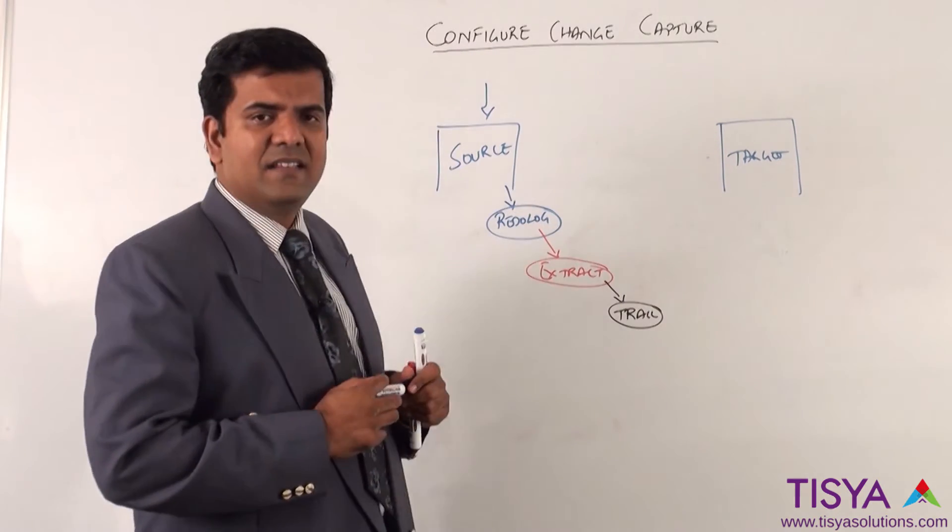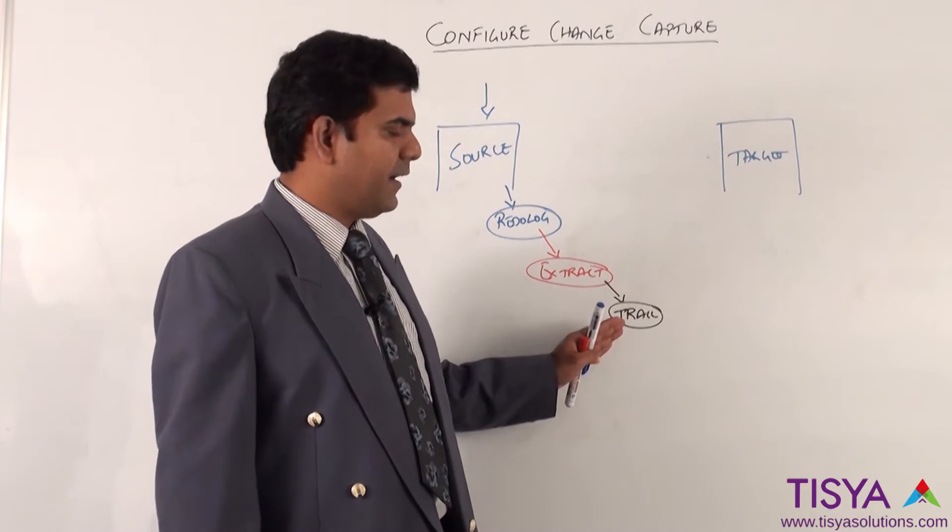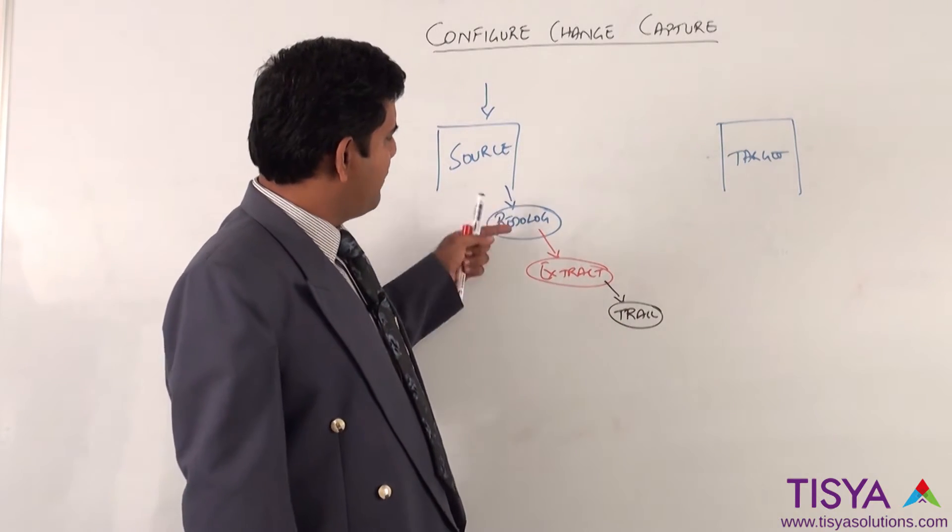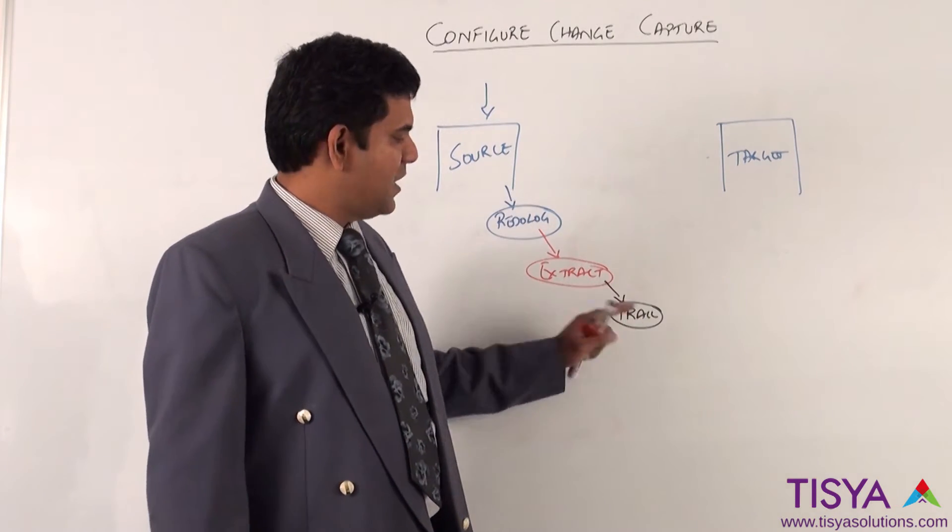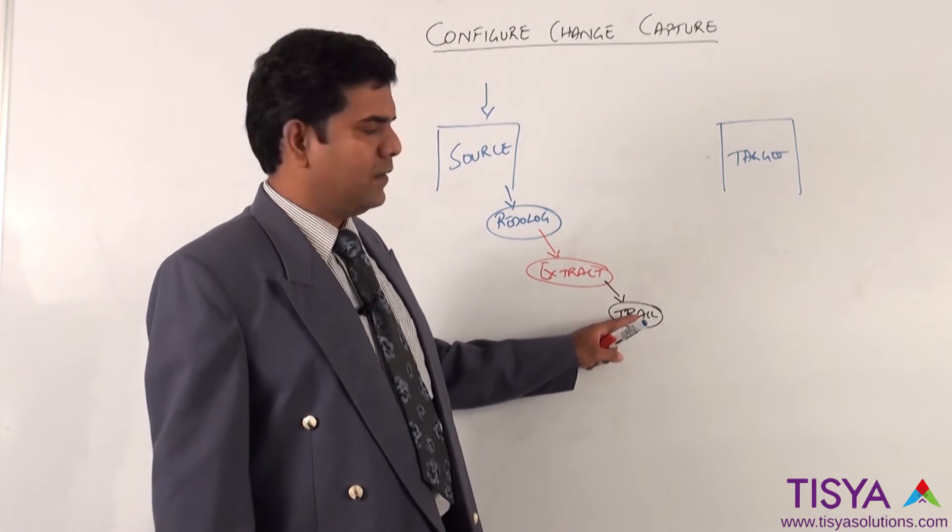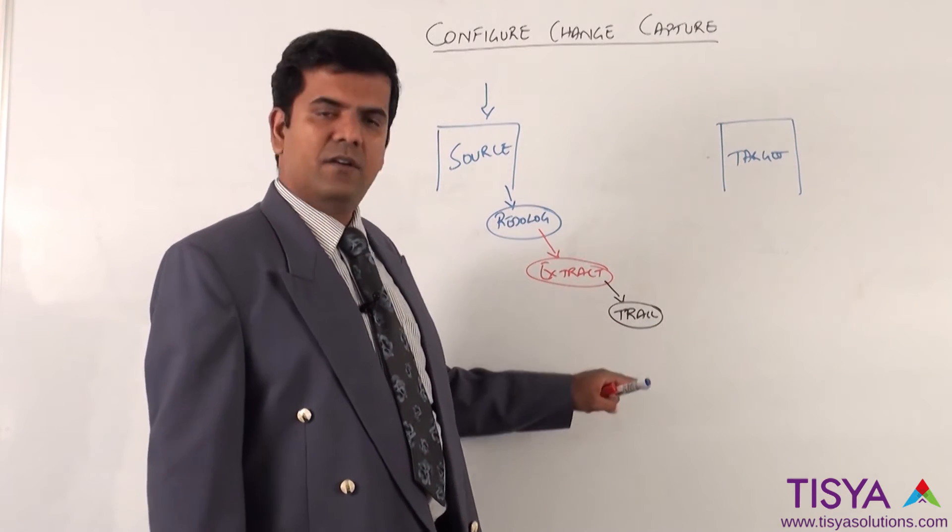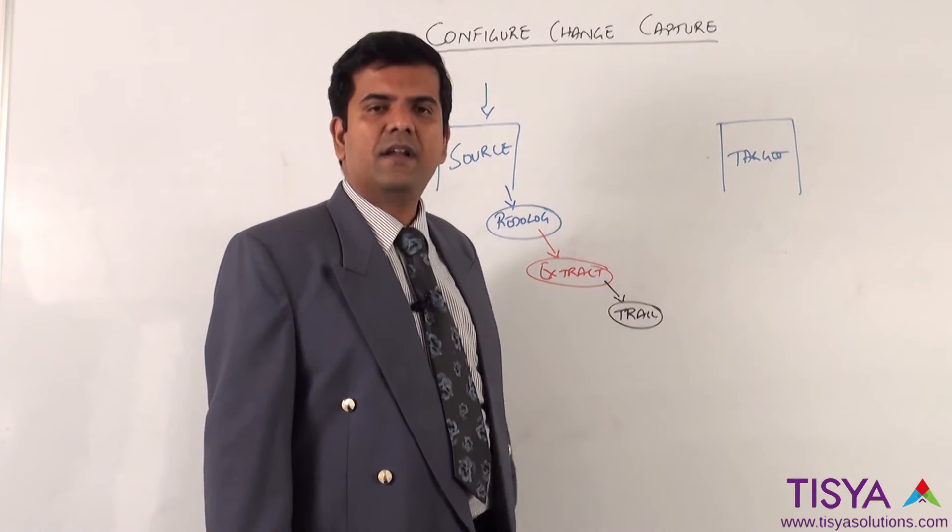What exactly is in a trail file we will talk about in a later chapter, but understand it will read from the redo log and produce the transactions into the trail. One important thing about the trail is only committed data that is written into the database will be captured and written to the trail which will be propagated into the target.